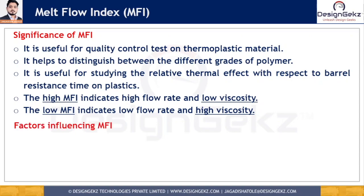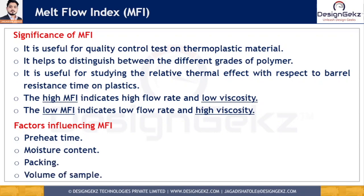Factors that can influence MFI readings include preheat time, moisture content, and packing and volume of the sample. If the cylinder is not preheated for the specified time, the flow rate will vary considerably. Moisture in the material, especially highly pigmented ones, can cause bubbles in the extrudate and significantly influence the weight of the extrudate. The sample resin must be packed properly by pushing the rod with substantial force to allow trapped air between resin pellets to escape — improper packing causes variation in test results. Any change in sample volume also significantly affects the heat input from the cylinder to the material, so sample volume must be kept constant.